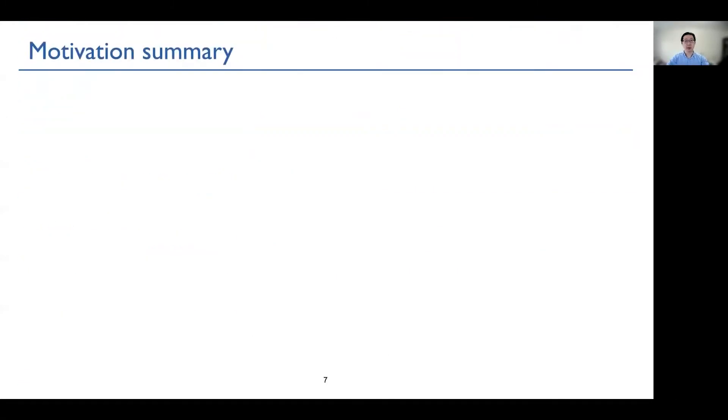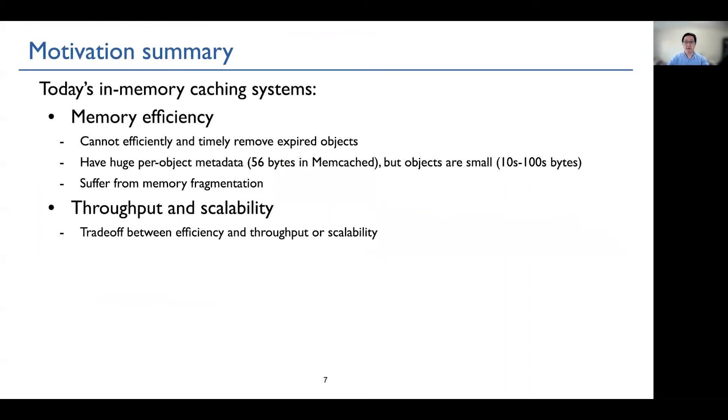As a summary of the motivation, we just show that existing memory caching systems are not memory efficient, because they cannot efficiently and timely remove expired objects. Further, in the paper, we show that these systems usually have huge per-object metadata. For example, memcached uses 56 bytes per-object metadata.